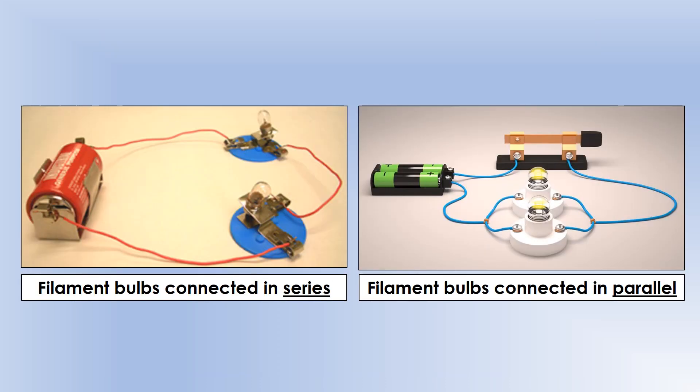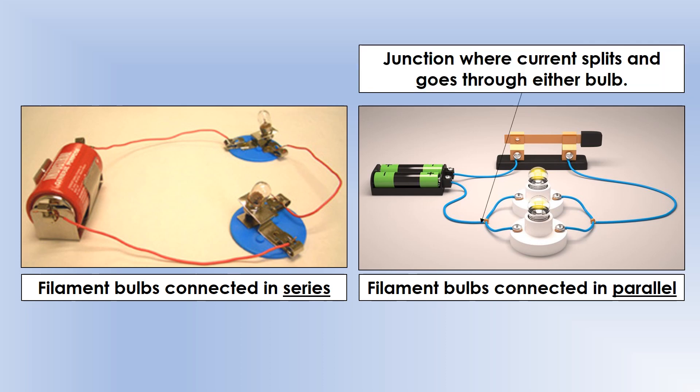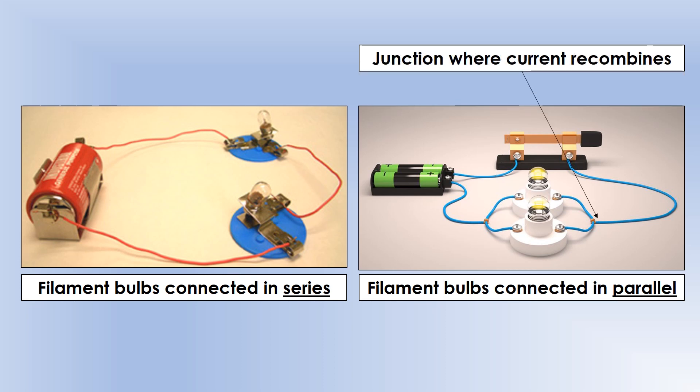To illustrate what this looks like. So on the left, you've got filament bulbs in series. On the right, you've got them in parallel. And the way you notice parallel is by looking for these junctions or splits. So you can see here, current comes out on the positive side. It splits, goes through either bulb, and then the current recombines to go through the switch there. So we've got a split and we've got a recombination point. Those are characteristics of parallel components.